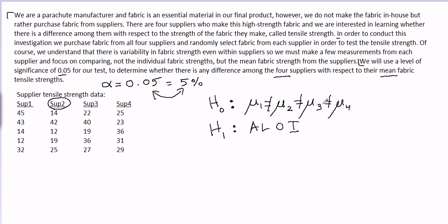Mu one equals mu two equals mu three equals mu four. And we saw this is the null hypothesis for a one-way analysis of variance. This is one way to write it, this is the way we will write it.